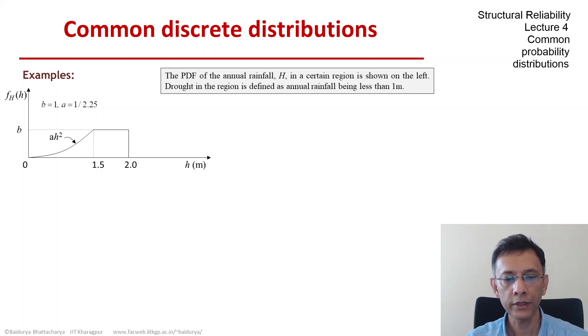Let's look at a few examples involving the geometric, the binomial, and the negative binomial distributions.